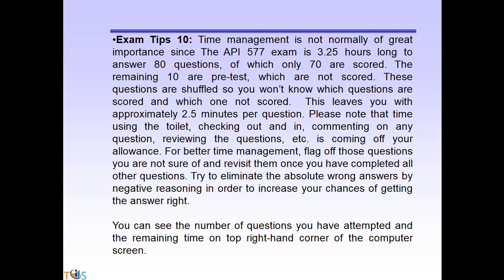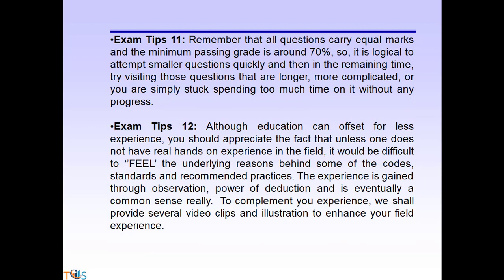Note that time spent using the toilet, checking in and out, commenting on questions, and reviewing counts against your allowance. For better time management, flag questions you are not sure of and revisit them once you have completed all others. Try to eliminate absolute wrong answers by negative reasoning to increase your chances of getting the answer right. You can see the number of questions attempted and remaining time in the top right corner of the screen. All questions carry equal marks and the minimum passing grade is around 70%. It is logical to answer smaller questions quickly and then revisit longer, more complicated ones in the remaining time.